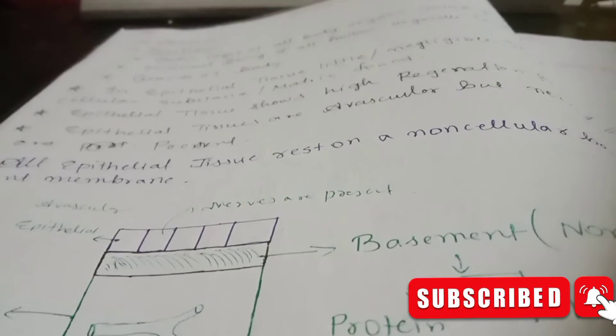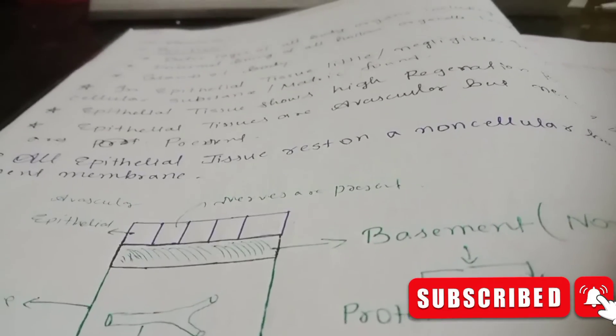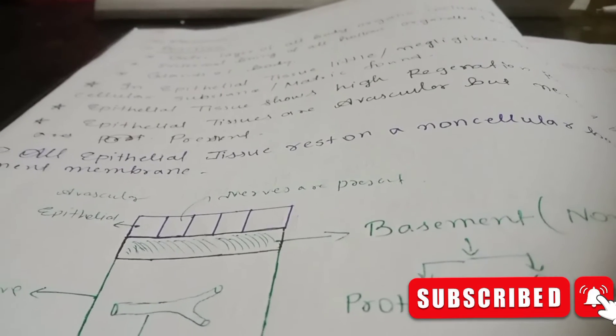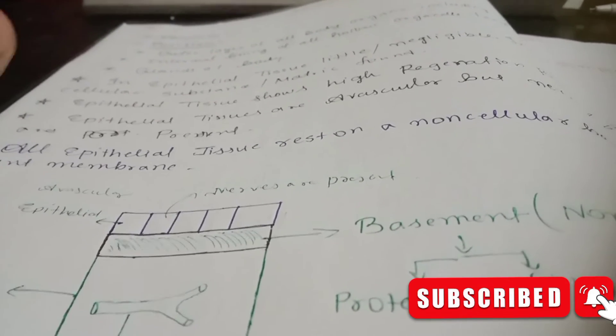Epithelial tissue shows high regeneration power. Epithelial tissue is avascular, but nerves are present.